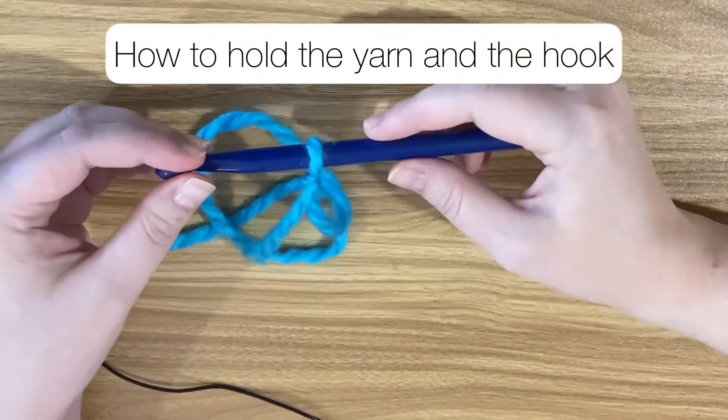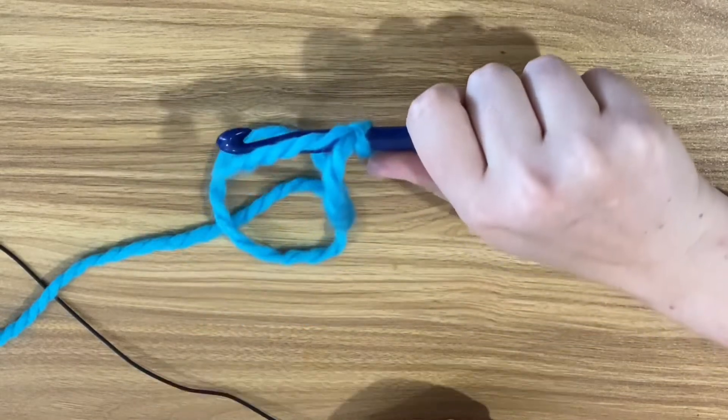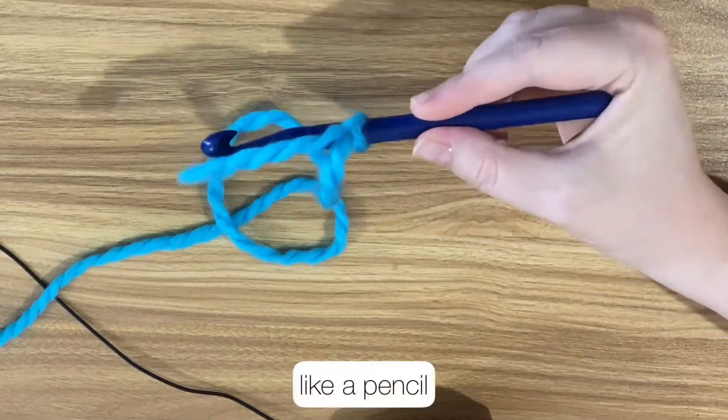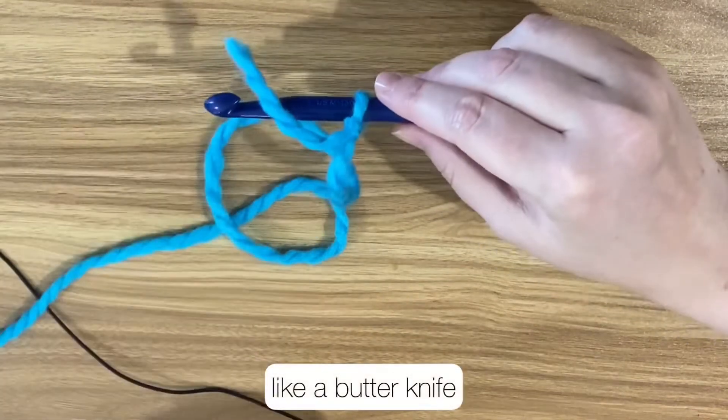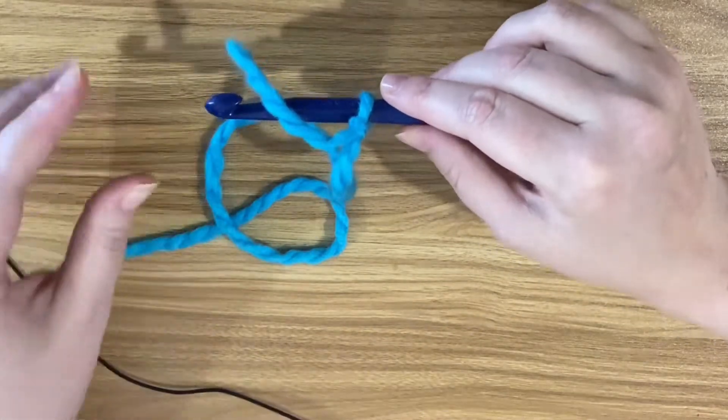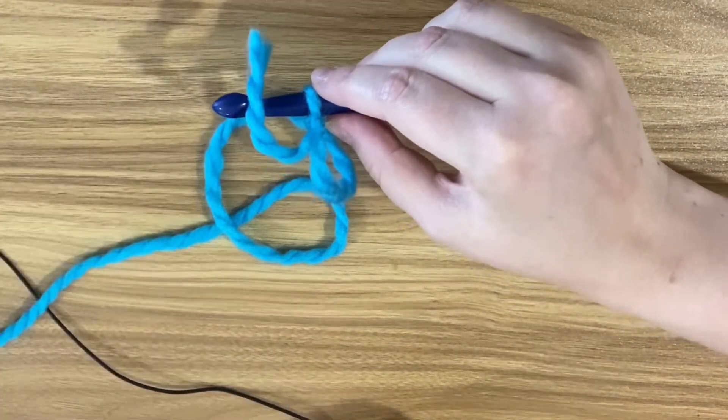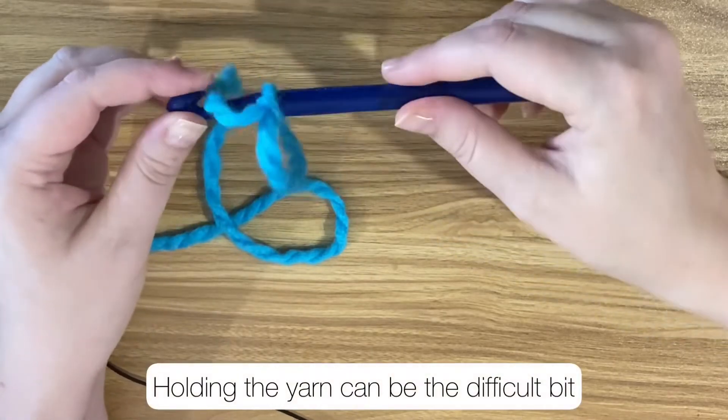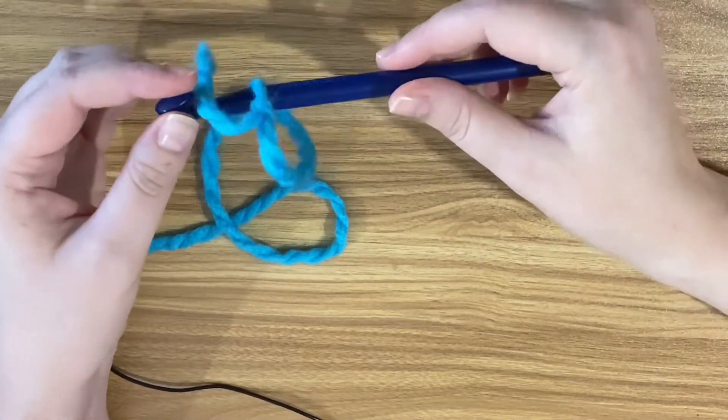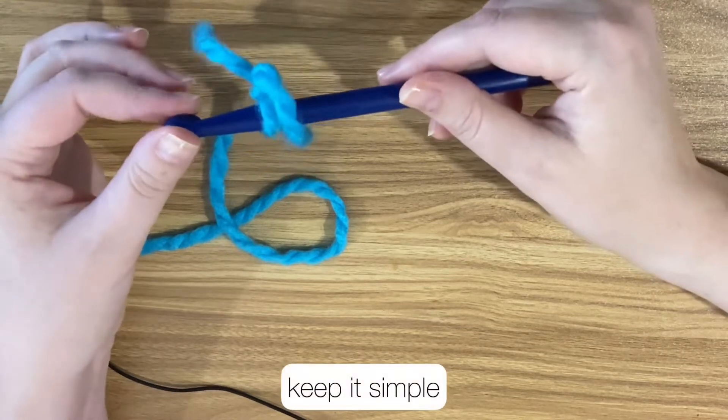Step two, how to hold the yarn and the hook. Hold the hook in your dominant hand. Try holding it like a pencil or like a butter knife. Either is fine. Kids might like to hold the hook closer to the hooked end as hooks are usually sized for adult hands. It's holding the yarn that can be the difficult bit. When you're making these bracelets with kids, I suggest that you handle that difficulty by avoiding it.